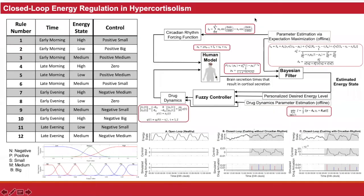In the first project, we aim to close the loop and do the energy regulation in patients with hypercortisol. First of all, we simulate the cortisol data profiles based on experimental data. Then by employing the state-based approach and Bayesian-type filtering, we estimate the energy state. By designing the fuzzy control with these types of rules, membership functions, and control criteria, we simulate both the open-loop and closed-loop scenarios. In the closed-loop scenarios, we can see in the highlighted background that it is the pulsed data control which resulted in these control actions. We could regulate the energy variations in patients with Cushing disease or hypercortisol.